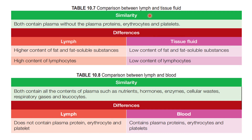Now let's compare lymph and tissue fluid. In terms of similarity, both contain plasma without plasma proteins, erythrocytes, and platelets. The differences: lymph has a higher content of fats and fat-soluble substances — if you remember the lacteal — and lymph also contains a high content of lymphocytes, which are components of the white blood cells, the leucocytes. Tissue fluid, on the other hand, has a low content of fat and fat-soluble substances, and a low content of lymphocytes.